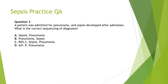Question 3: A patient was admitted for pneumonia and sepsis developed after admission — what is the correct sequencing of the diagnosis? Since the patient was admitted for pneumonia, pneumonia is the reason for encounter and should be coded first, then sepsis. Option B is correct.